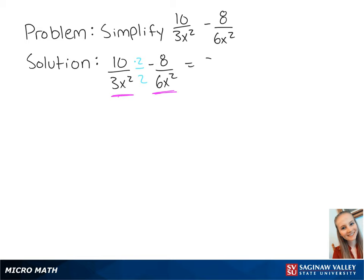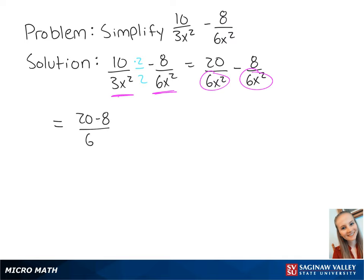this will give us 20 over 6x squared minus 8 over 6x squared. Now we have a common denominator of 6x squared, so we can combine the two fractions. This gives us 20 minus 8 over 6x squared,